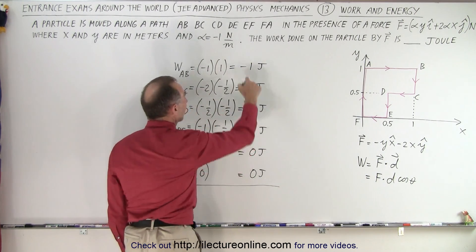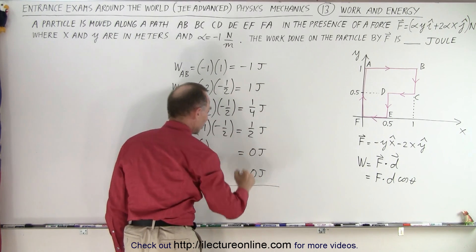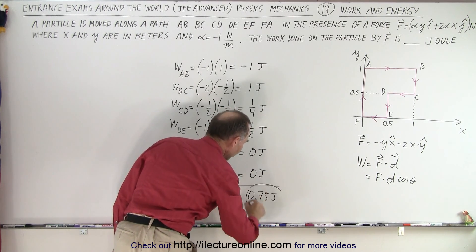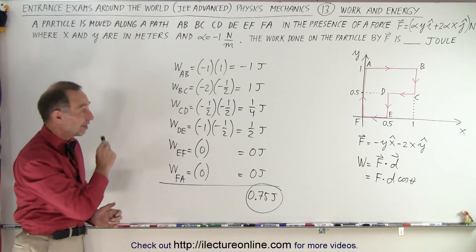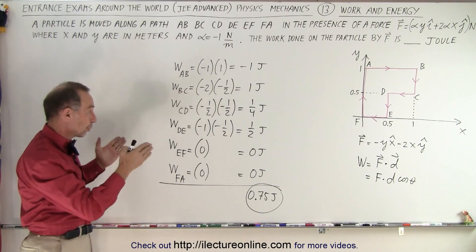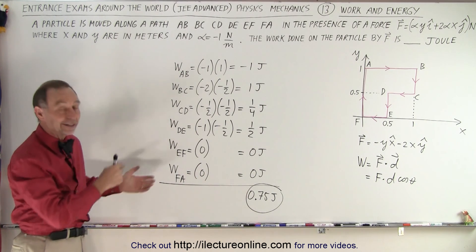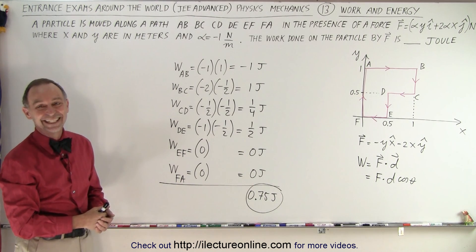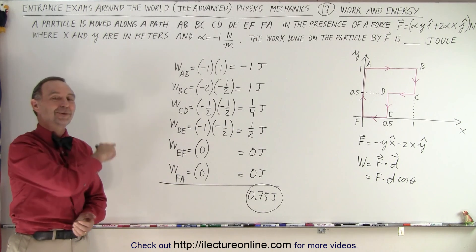Adding everything together: −1 + 1 + ¼ + ½ = ¾, or 0.75 joules of total work done traveling around those six paths. And that is how it's done. You can actually work through that fairly quickly — probably under three minutes — giving you extra time for the next problem.